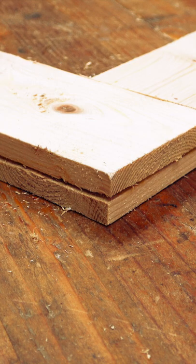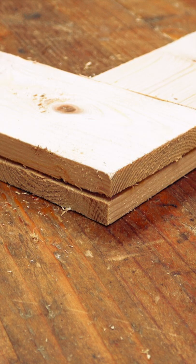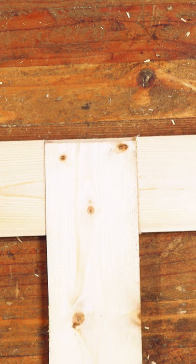There are four common ways to use half lap joints, depending on the placement of each board. There's the cross half lap, tee half lap, corner half lap, and splice half lap.